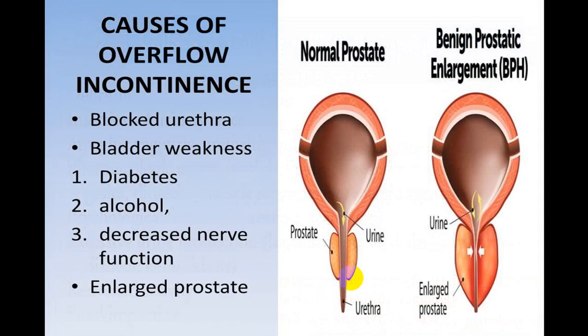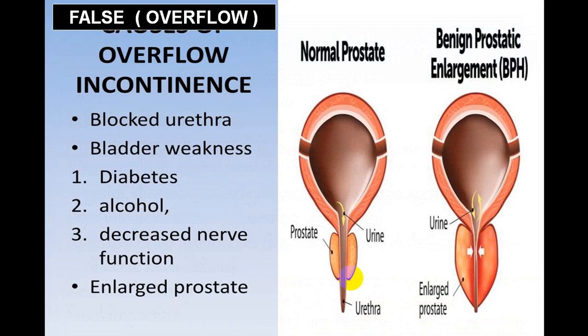Another mnemonic is DRIP: D for drugs and delirium, R for restricted mobility and retention, I for infection, impaction, and inflammation like atrophic urethritis or vaginitis, and P for polyuric states like congestive heart failure, diabetes mellitus, or hypercalcemia. Overflow incontinence is usually due to obstruction like blocked urethra, bladder weakness, diabetes, alcohol, or increased prostate size such as BPH.